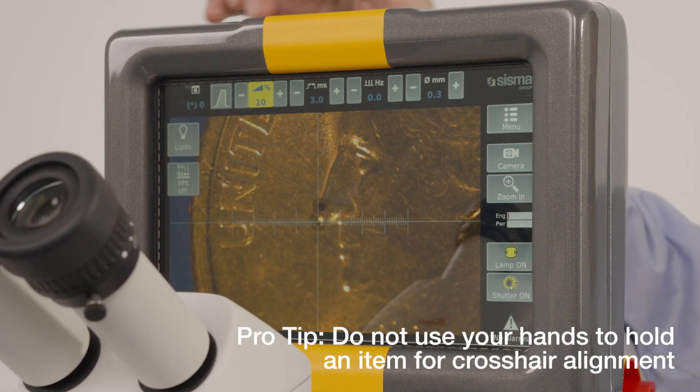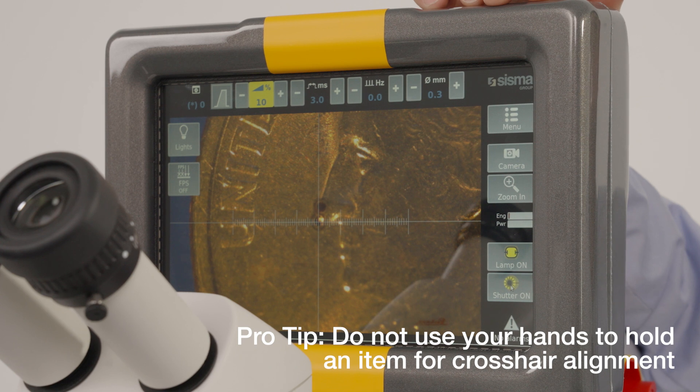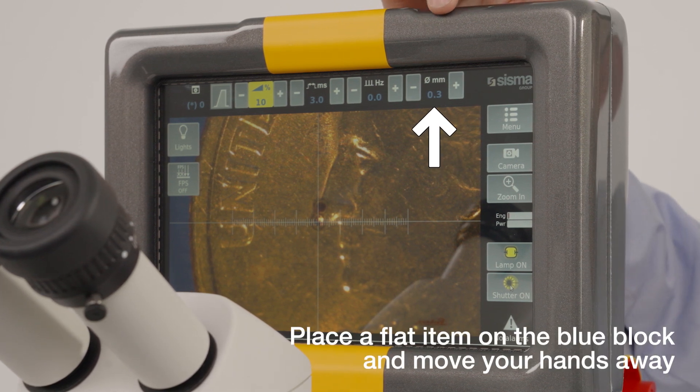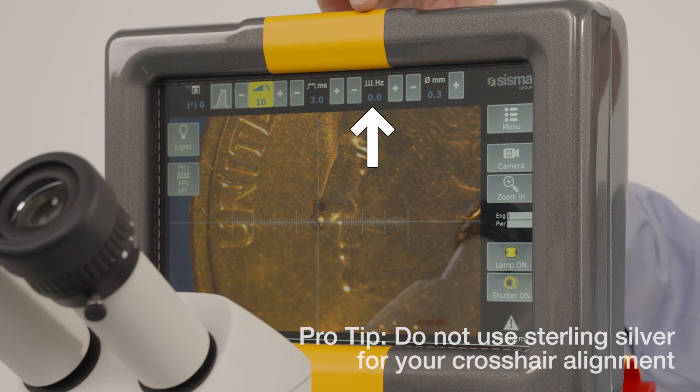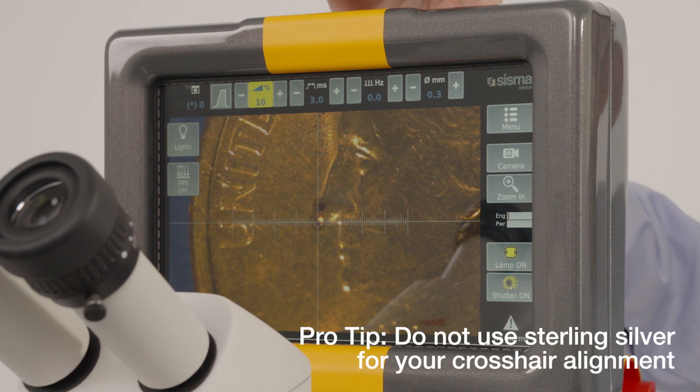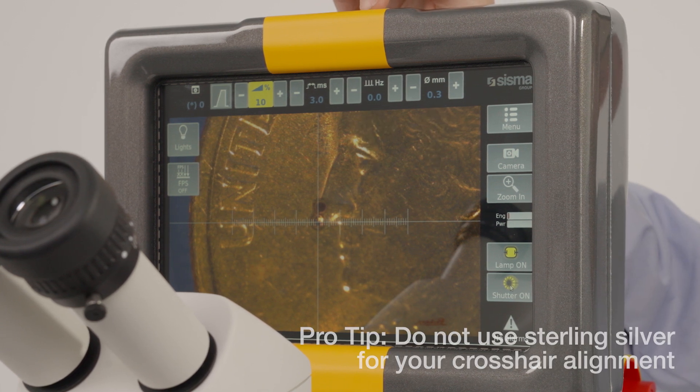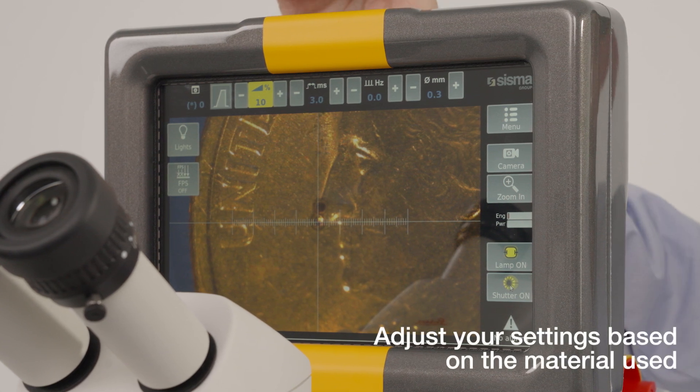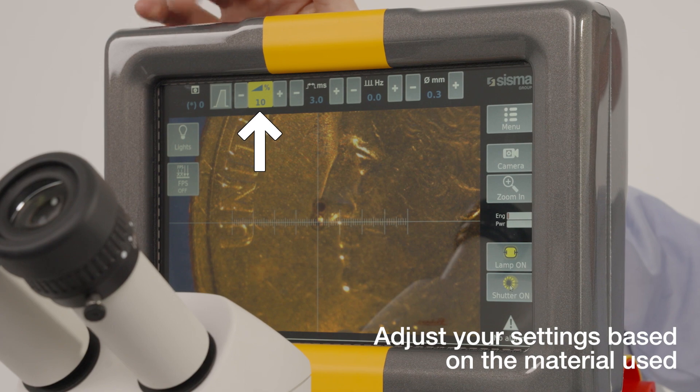Now we have some settings here. These are what you want to use for aligning that first shot. Set the beam diameter to 0.3 millimeters, the shot frequency to 0.0 hertz so you only fire one shot on each pulse of the foot switch. Set the pulse duration to about three milliseconds and the power setting to about 10 percent.